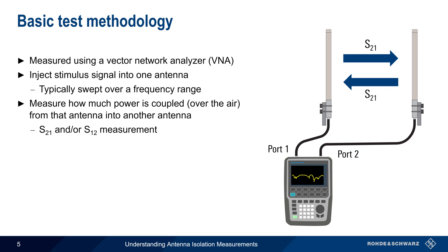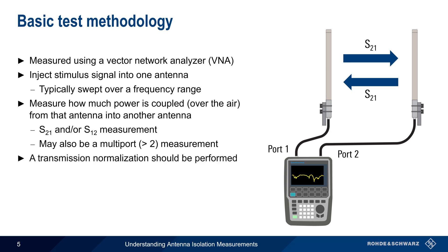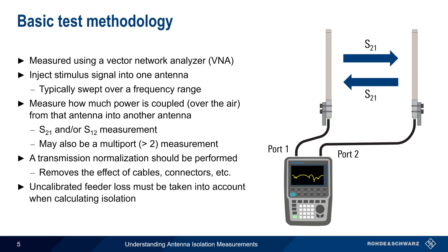Although two-port measurements are the most common, multi-port VNAs — that is, VNAs with more than two ports — are sometimes used to make measurements for multi-antenna systems. As with most transmission measurements, a normalization should be performed whenever possible. By connecting the ports together and performing a normalization, the effect of cables, connectors, etc., can be removed from the measurement. However, in cases where normalization cannot be performed at the antenna feed points, the loss in feeder cables between the VNA and the antennas must also be accounted for, since uncalibrated cable loss will cause the measured antenna isolation to appear greater than the actual isolation, especially in the case of longer or more lossy cables.